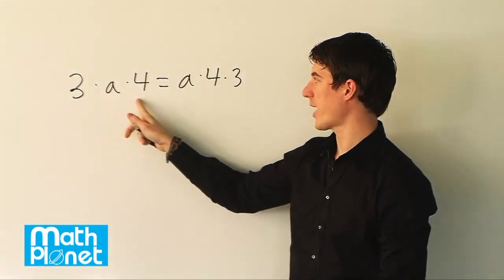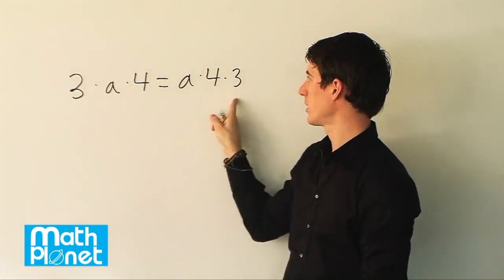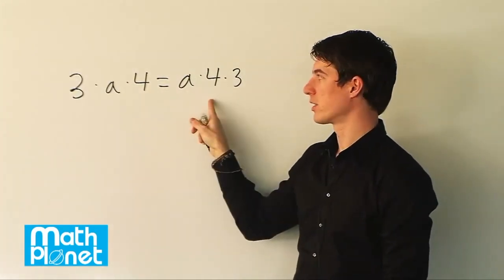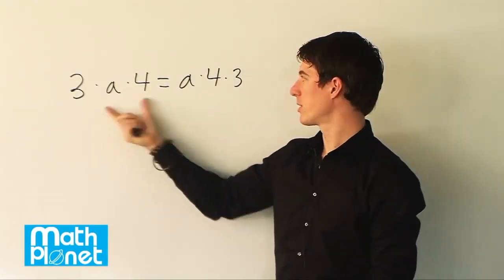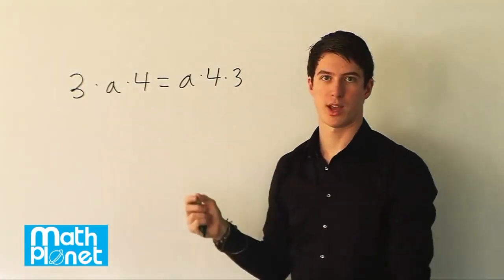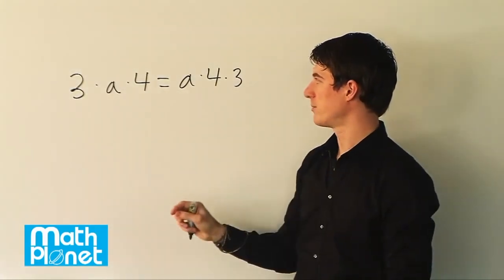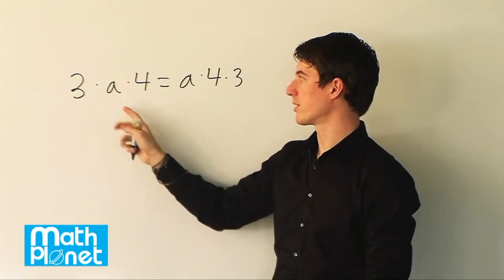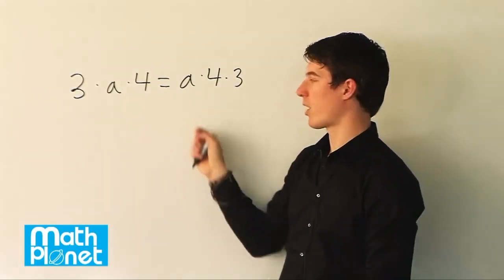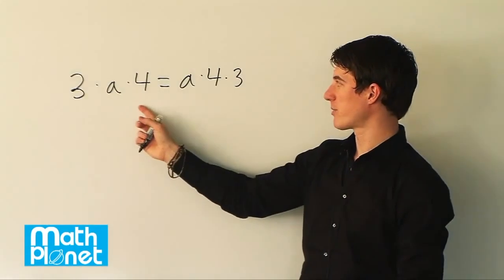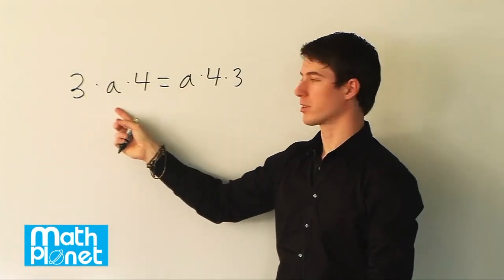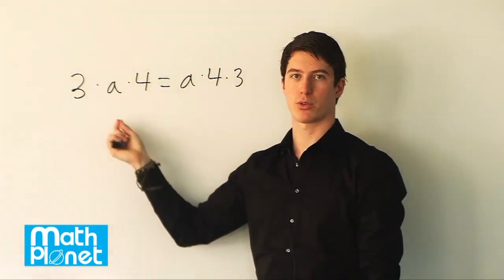So since we have the same three factors in both cases, 3, a, and 4, then we know that these are the same expressions on either side of the equation, either side of the equal sign. So what these both come out to be is 4 times 3 which is 12, so they're both equal to 12a. But all you need to remember is that you can rewrite a factor of an expression in any order that you like.